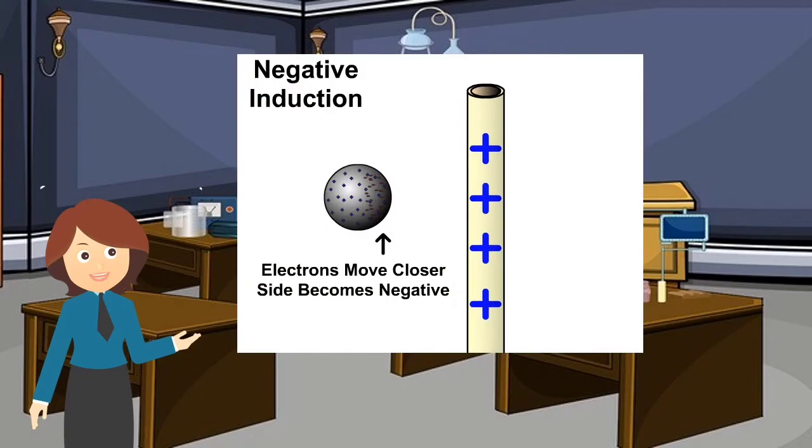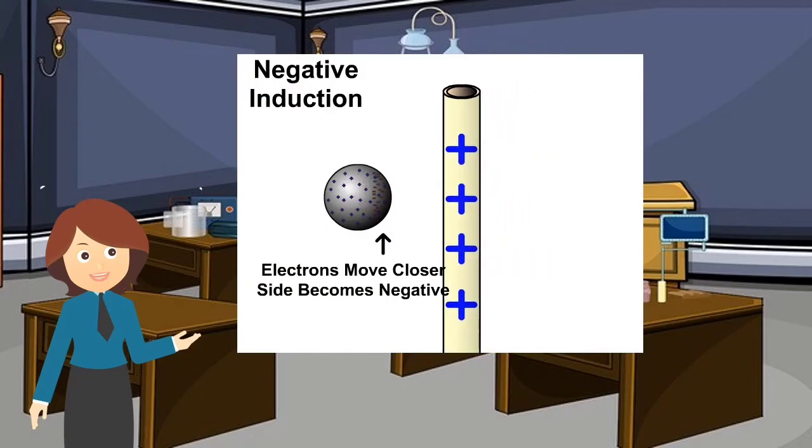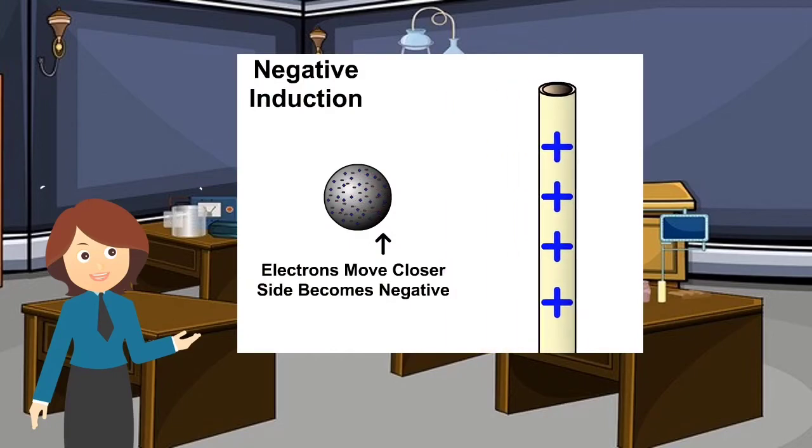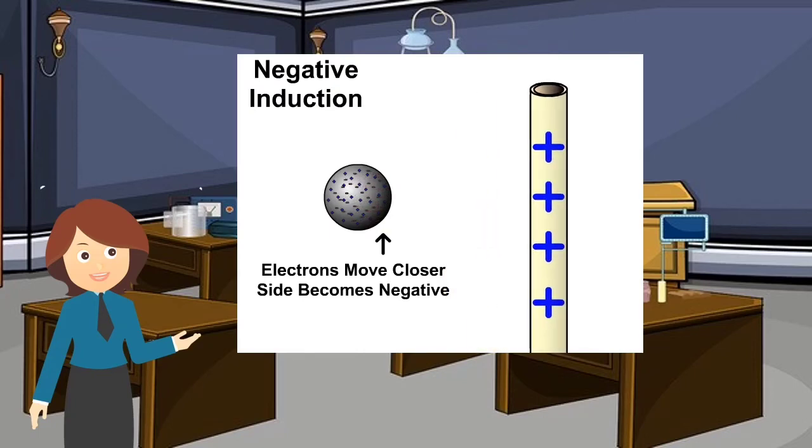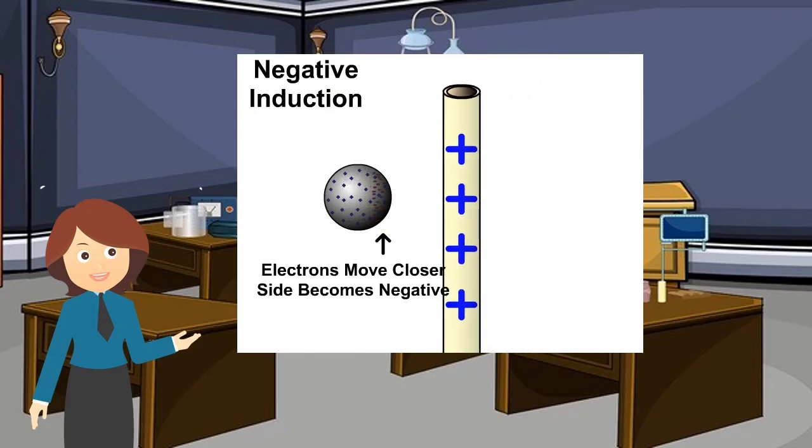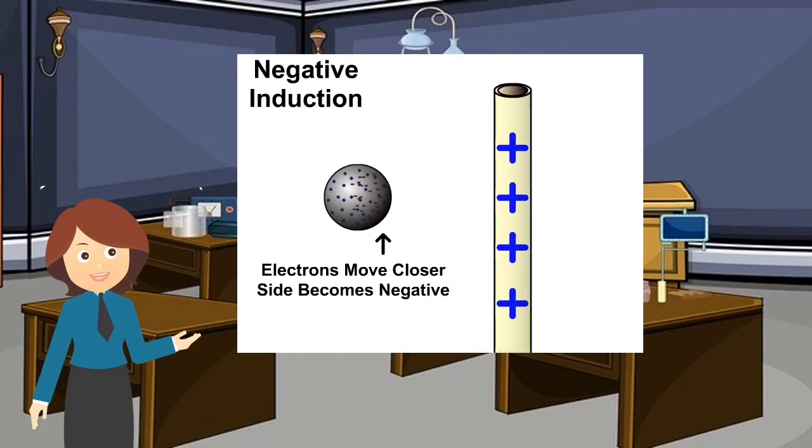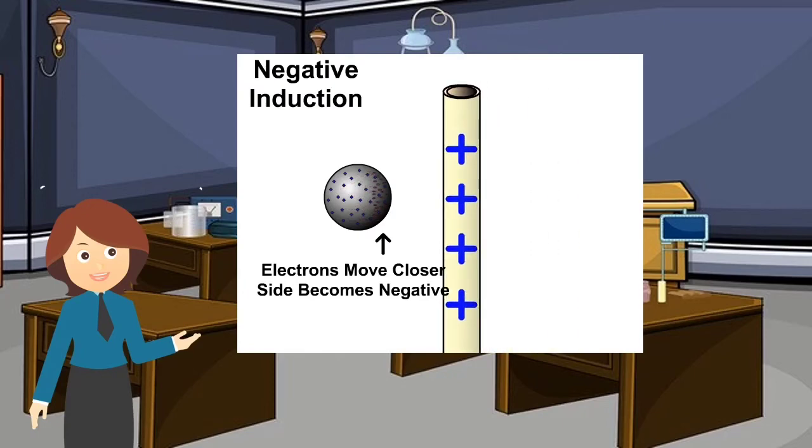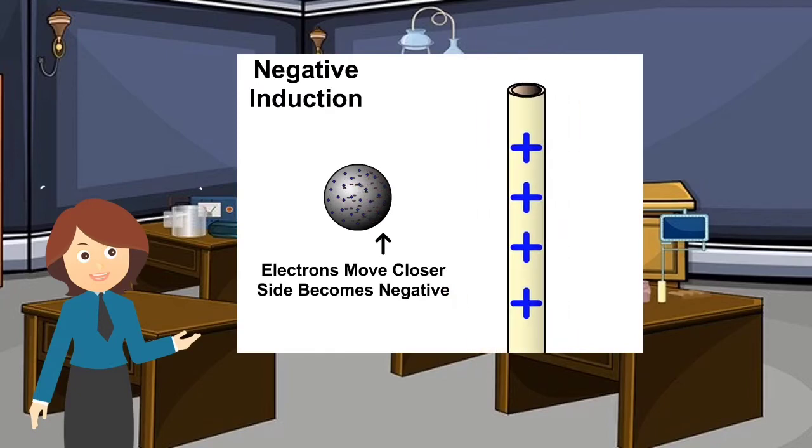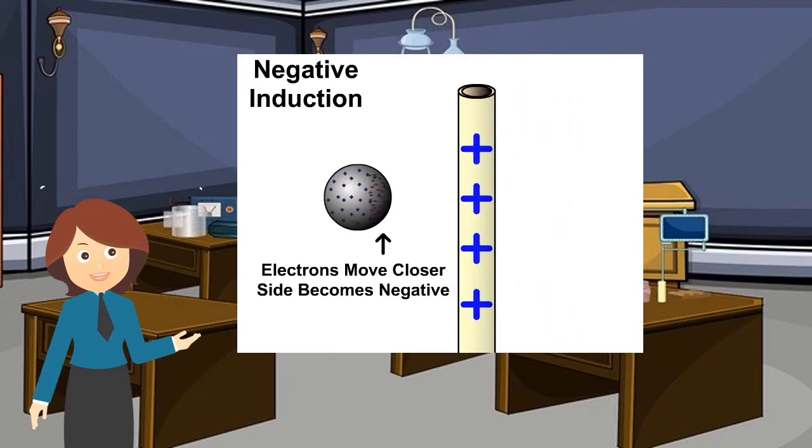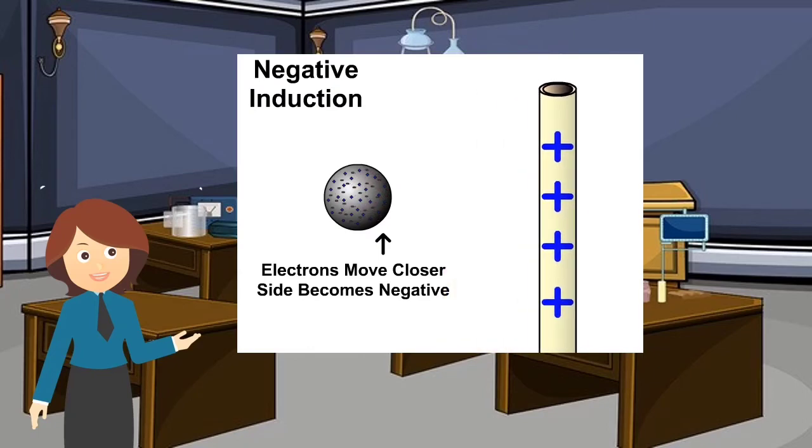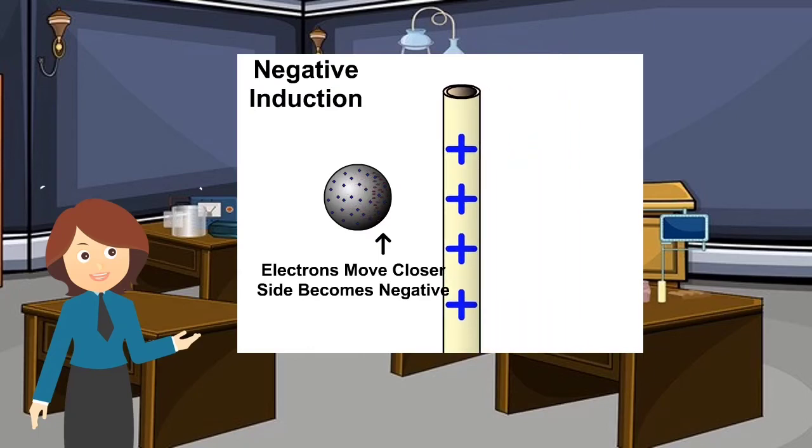As you can see in the picture, when a positively charged rod is brought near the neutral sphere, negative charges are induced on the side facing the positively charged rod, whereas positive charges are induced on the other side of the sphere. From both of these pictures, we can understand that when we charge a neutral body using the process of induction, opposite charges are produced on the neutral body.